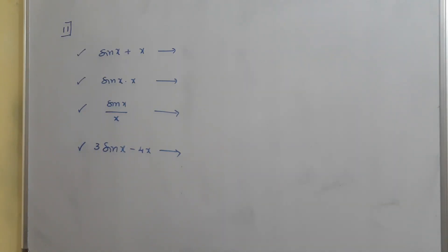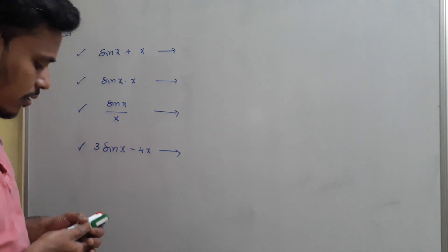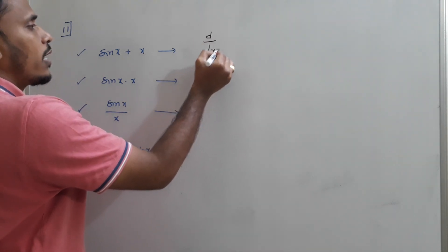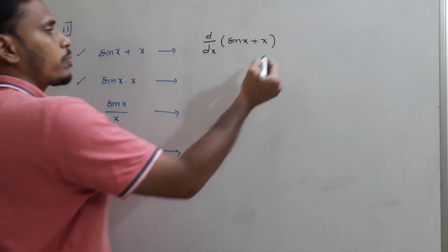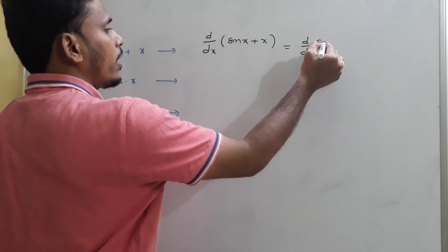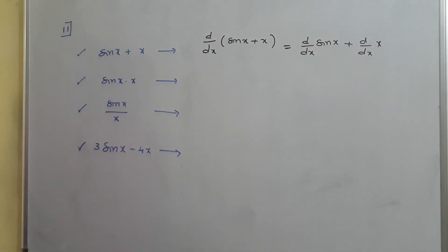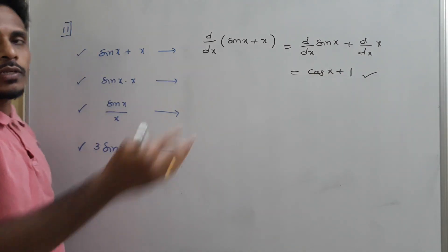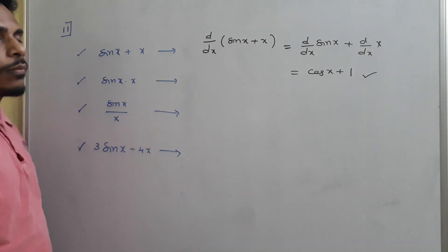For sin x + x, find its derivative using the summation rule: d/dx of (sin x + x) equals d/dx of sin x plus d/dx of x. Since d/dx of sin x is cos x and d/dx of x is 1, the derivative is cos x + 1.